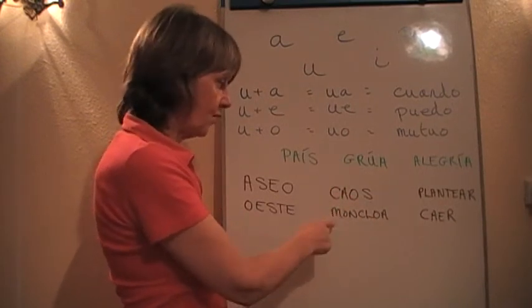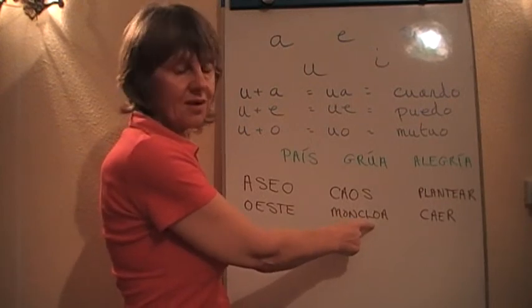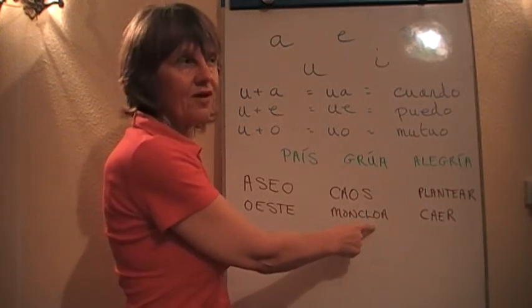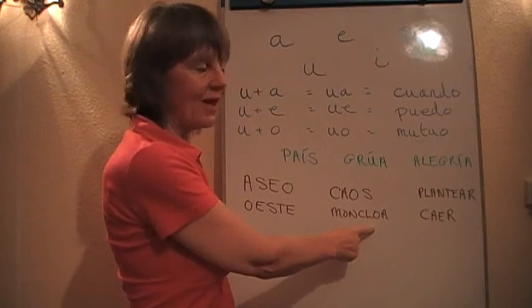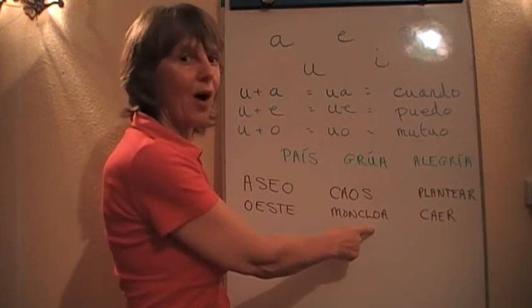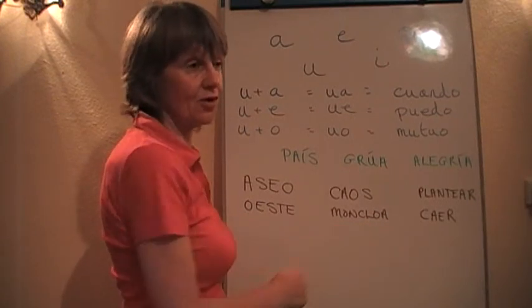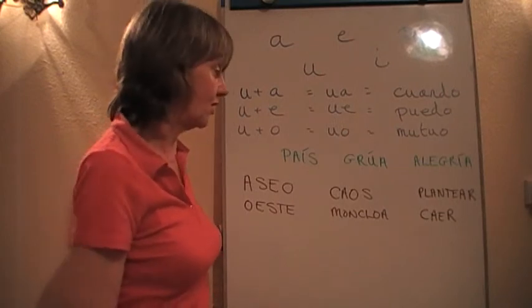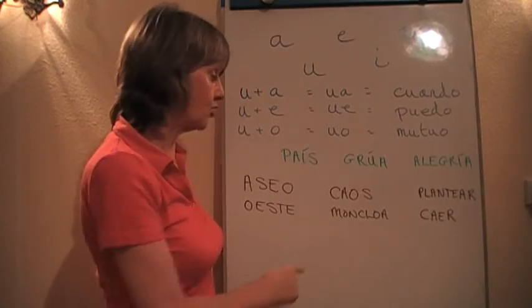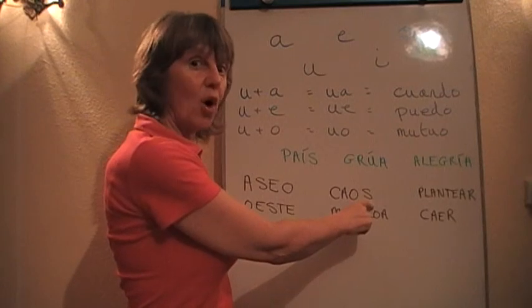Put those the other way. And I couldn't think of a better example than the equivalent of number 10 Downing Street in Spain which is called Moncloa. If you listen to the news you'll hear Moncloa mentioned quite a lot. It's where the president of the country lives. Moncloa. Beat on the o.